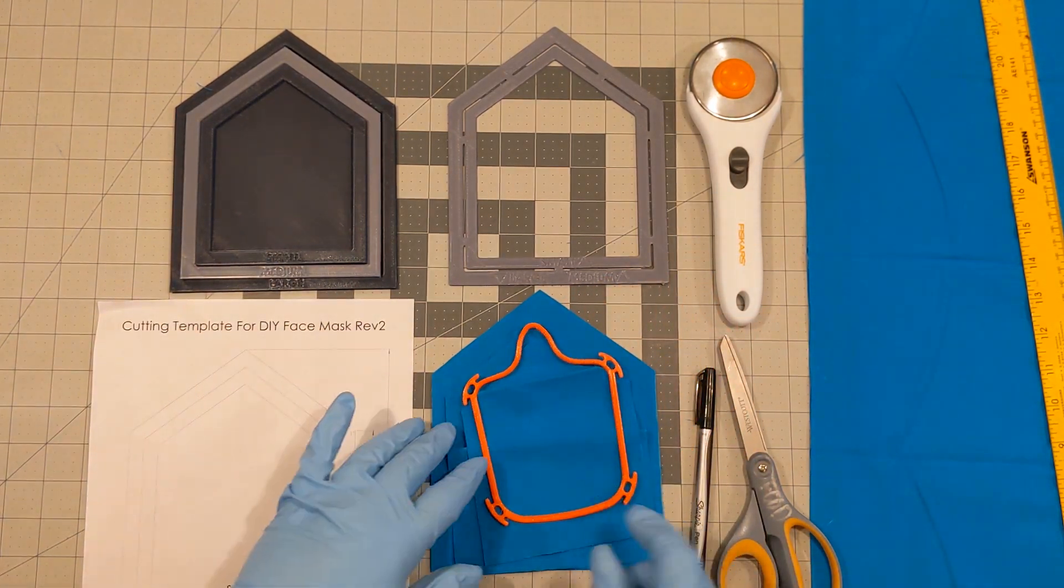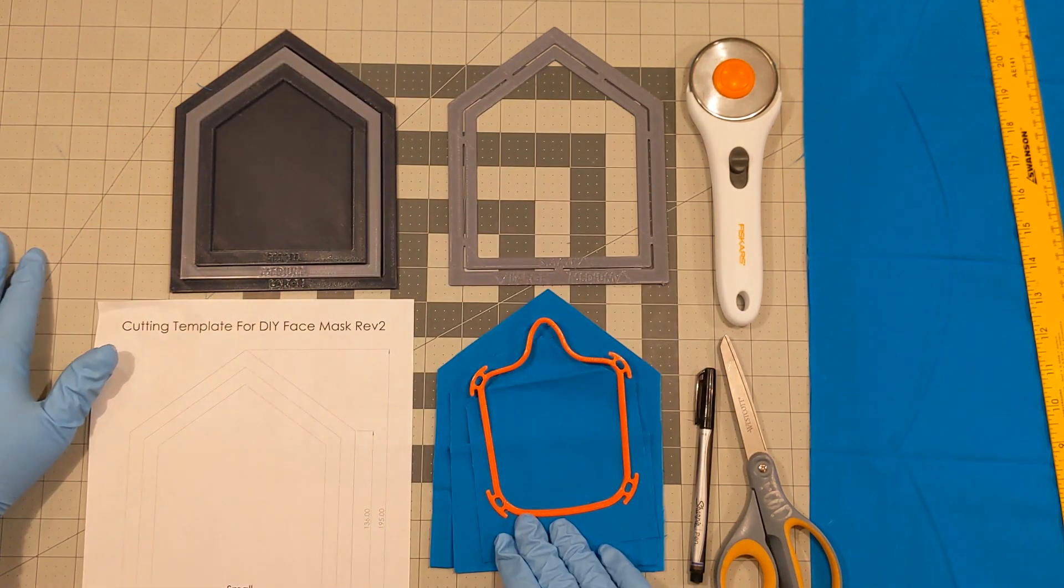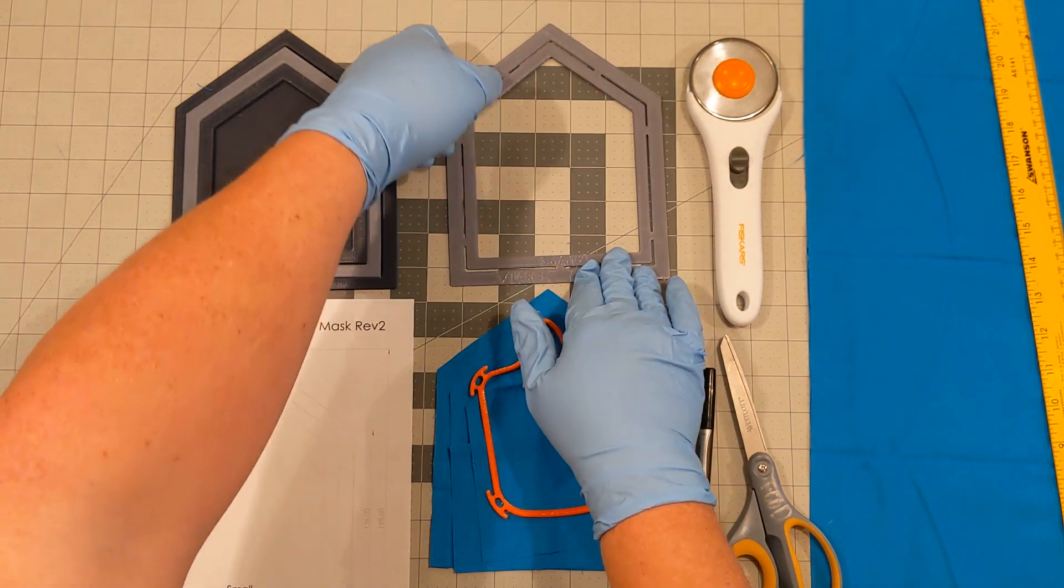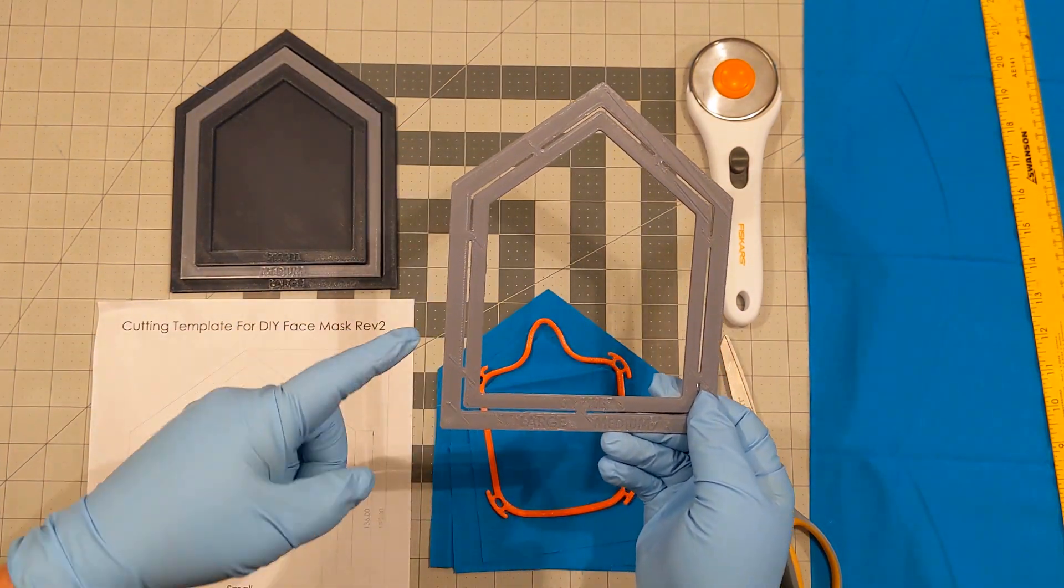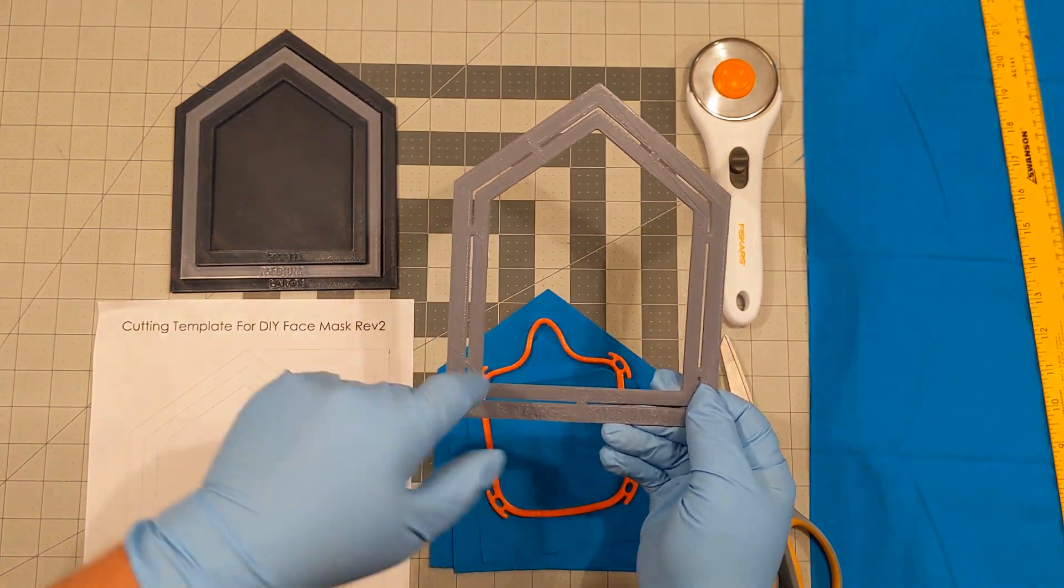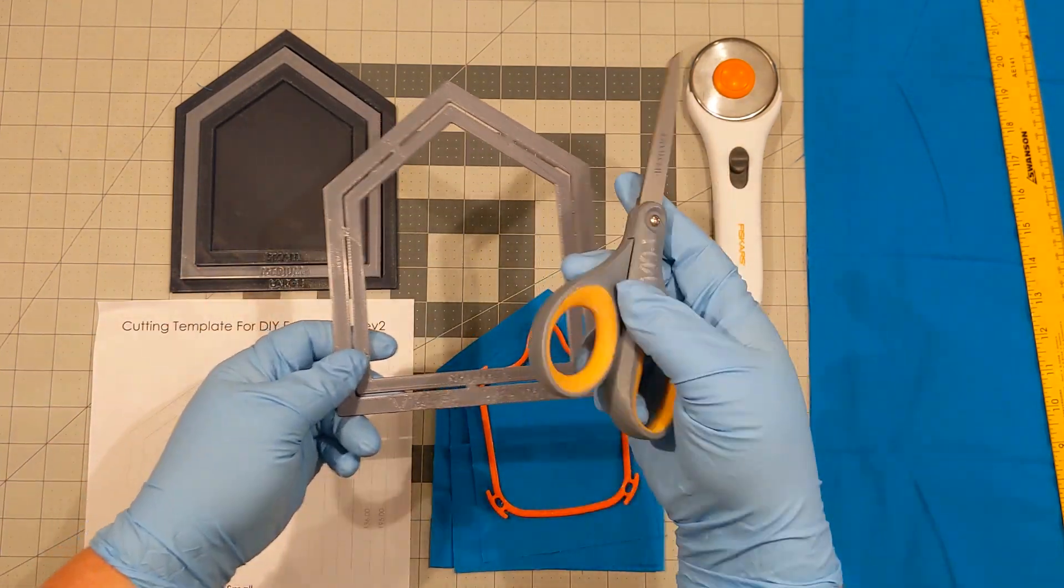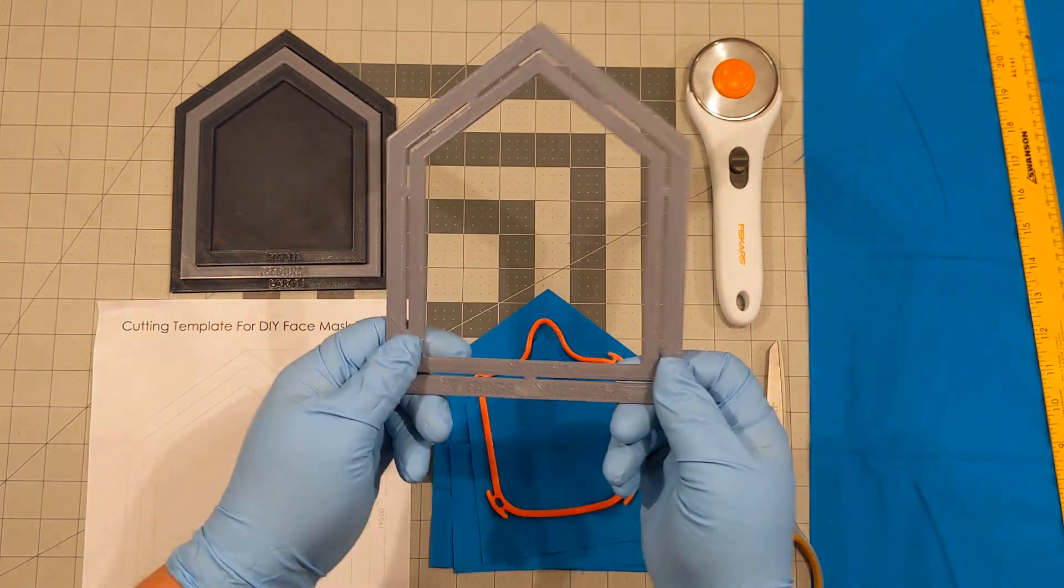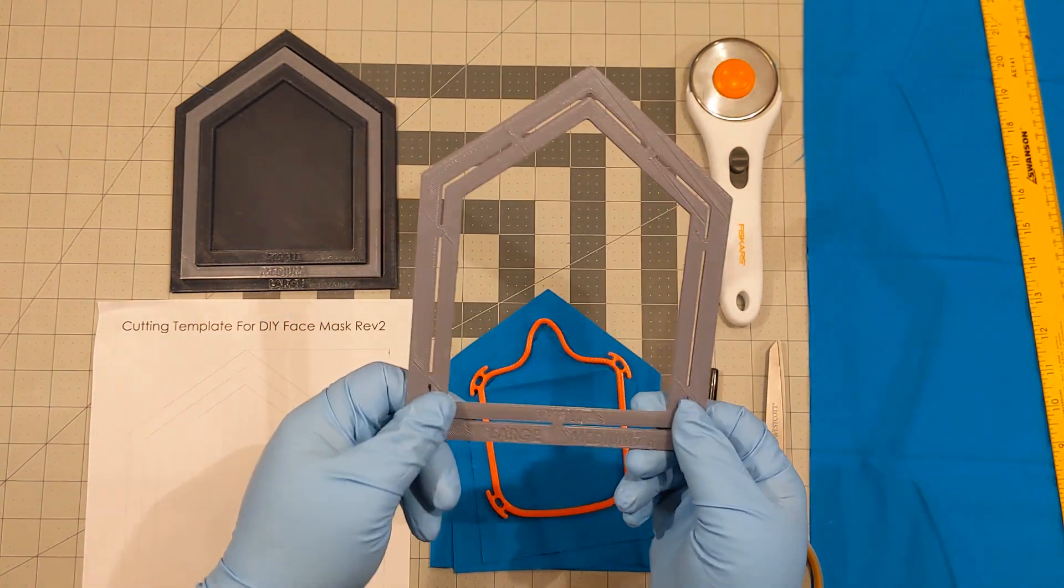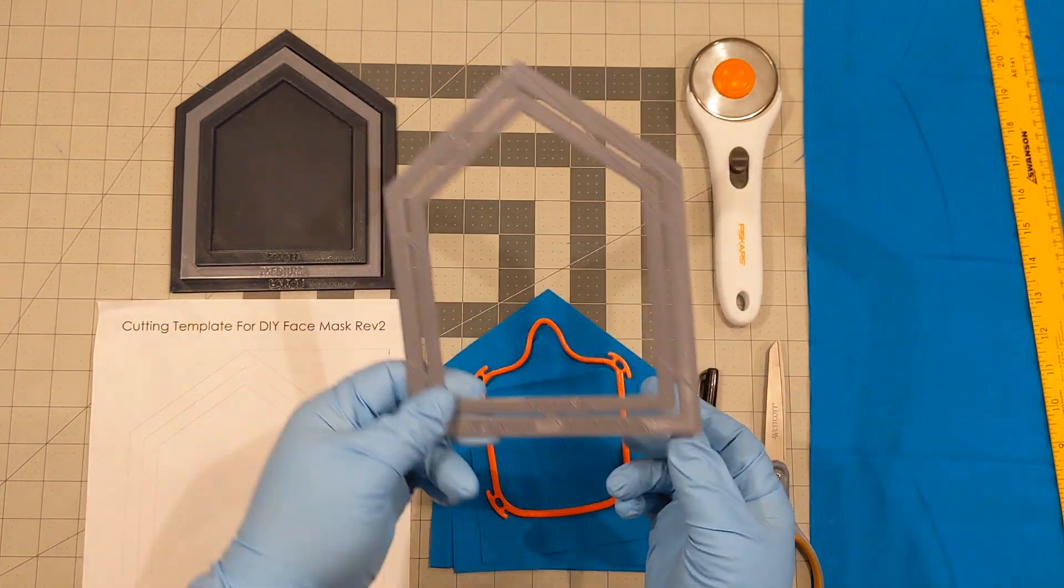There are three different methods of how to cut out the filter material for the frames. The first method is the trace and cut. This is a great tool. It has large, medium and small. So you'll lay this down on the material, trace it out and then use scissors to cut it out. If you're only doing a couple of masks, this is a great option. It's quick to print, takes about an hour and you can do large, medium and small all in one tool.